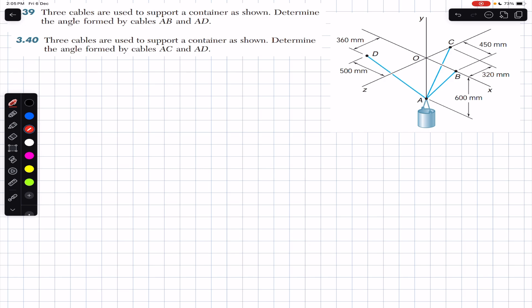As I discussed in the previous video, we have to define position vectors. We need to find a vector from A to B, call it R_AB, and similarly a position vector from A to D, R_AD. We have to find the angle theta between both of these cables. Since the dot product gives us the answer, we can say: R_AB · R_AD = |R_AB| × |R_AD| × cos(theta).